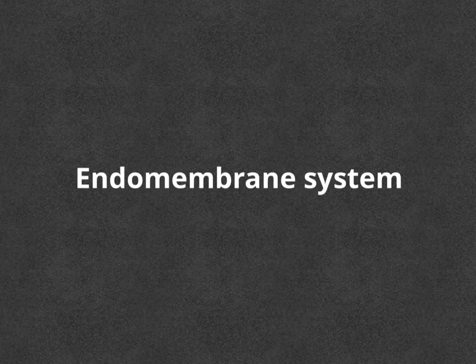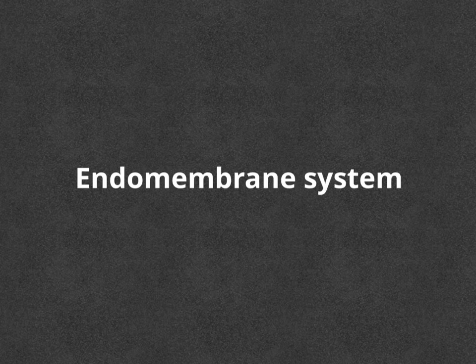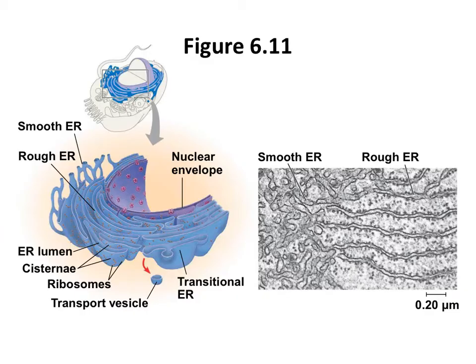The endomembrane system is responsible for regulating protein traffic and performing metabolic functions within the cell. It consists of the nuclear envelope, the endoplasmic reticulum, the Golgi apparatus, lysosomes, vacuoles, and the plasma membrane. These components are either continuous or connected via transfer by vesicles. The rough endoplasmic reticulum is studded with ribosomes — the sites of protein synthesis. Once proteins are synthesized on ribosomes attached to the rough ER, they are exported from the cell, sent to lysosomes, or even the plasma membrane.